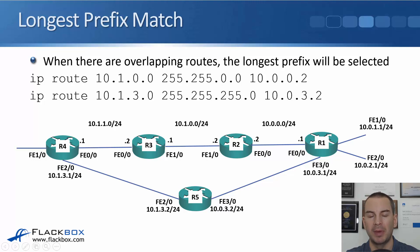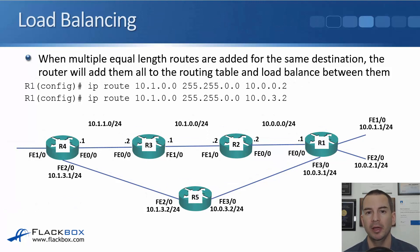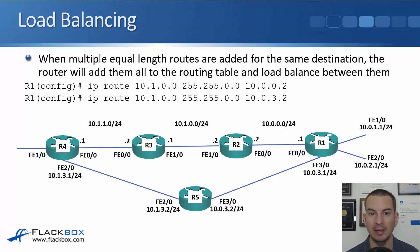Another way to say longest prefix match is that the most specific route wins. But what if you've got multiple routes for the exact same destination — same destination IP address and same prefix? In that case, the router will load balance traffic over those routes. On R1, if we have two routes both for 10.1.0.0 255.255.0.0 but with different next hops — 10.0.0.2 and 10.0.3.2 — the router will load balance traffic across both next hops.